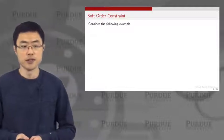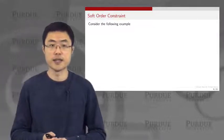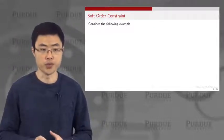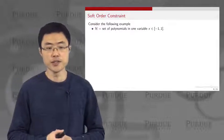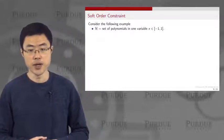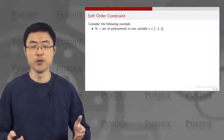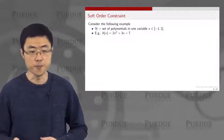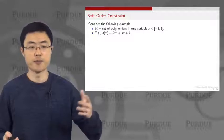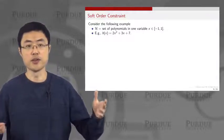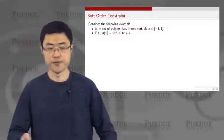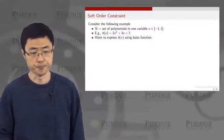Let's first talk about the concept of weight decay, or let's call it the soft order constraint. Consider the following example: you have a hypothesis set which is a one-variable function defined on the interval from minus one to one, and your hypothesis set contains all polynomials like 2x squared plus 3x plus 7 — polynomials of this type.